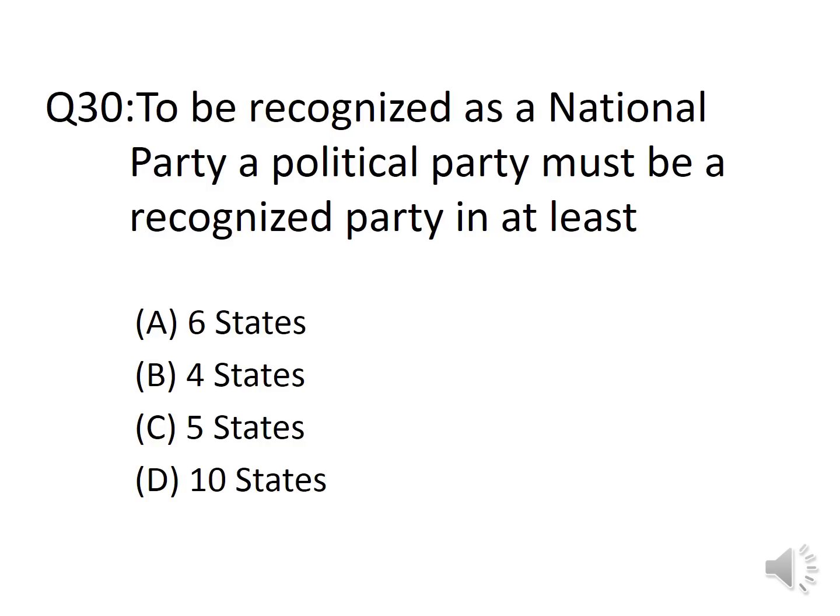Question 30: To be recognized as a national party, a political party must be a recognized party in at least: A. 6 States, B. 4 States, C. 5 States, D. 10 States. The answer is Option B, 4 States. Recently, Trinamool Congress (TMC) became the seventh national party, recognized as a state party in West Bengal, Manipur, Tripura, and Arunachal Pradesh.